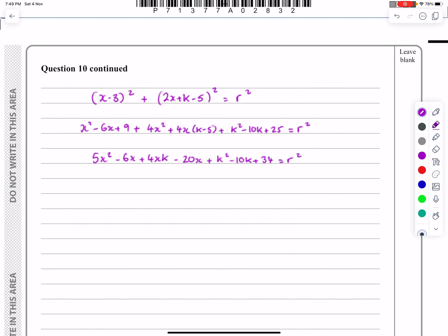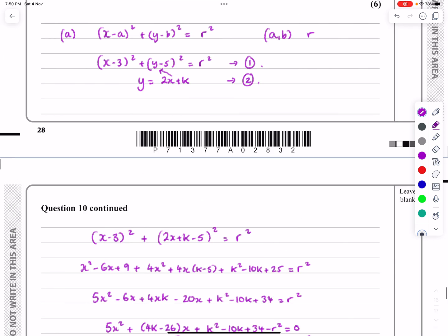So if I tidy this all up, I've got 5x² - 6x and I've also got + 4kx there. I've got - 20x. That's all my x's. Then I've got k² - 10k + 34 = r². So as I say, showing that this is a proof, I can then go from that fairly reasonably to the next stage, which is the answer, to say it's 5x² + (4k - 26)x + k² - 10k + 34 - r² = 0. And that's actually what we were trying to prove in the first place.